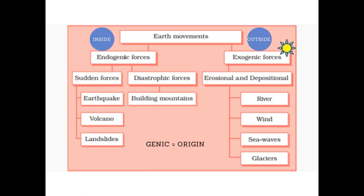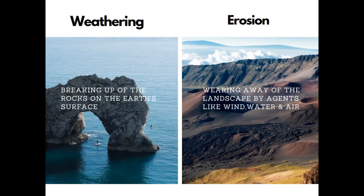Now let's see about exogenic forces and their activity. Two geological processes occur on Earth: one is weathering and the other is erosion. Earth's landscape is worn away due to these geological processes. Weathering is the breaking up of rock, whereas erosion is the wearing away of landscape caused by natural agents like wind, water, air, and ice.